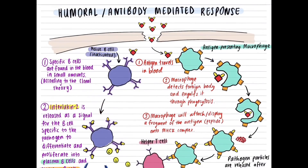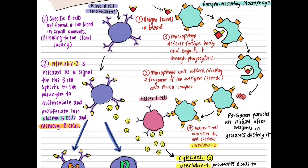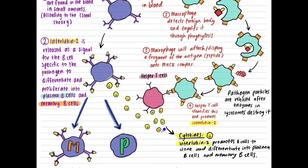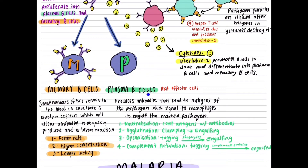Within the antibody-mediated response, a macrophage engulfs the pathogen and presents the antigen on its surface protein. The helper T cell attaches its receptor to that antigen and releases interleukin-2, a type of cytokine which activates the naive B cell to differentiate and clone into plasma B cells and memory B cells. The plasma B cell is responsible for producing antibodies, while the memory B cell remembers the same pathogen for a faster response during secondary exposure, as low concentrations of memory B cells remain in the blood for a very long time.